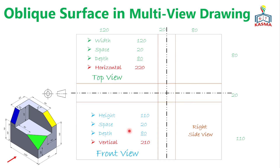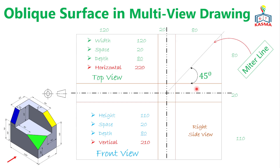Once we construct the three principal views, we construct a miter line at 45 degrees from the corner. This is very helpful for transferring dimensions from the top view to the side view, or vice versa, especially for depth dimensions. It is particularly useful when there is an inclined, oblique, or circular surface, allowing you to construct one view from known dimensions of another.